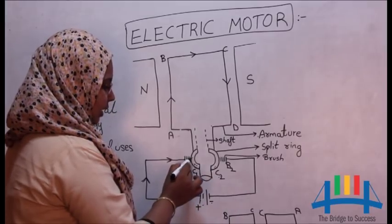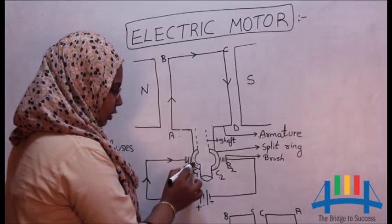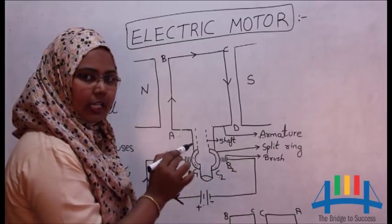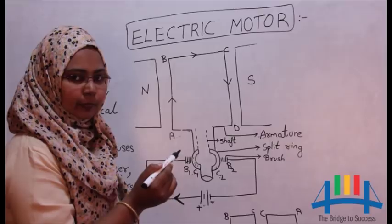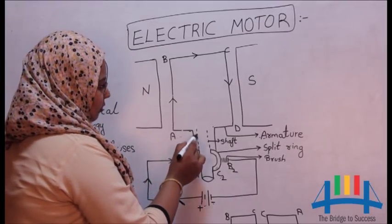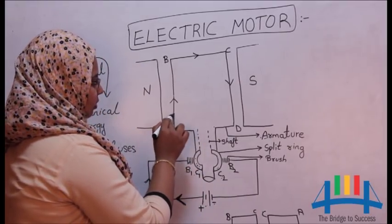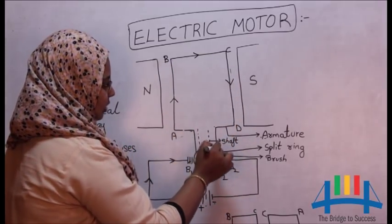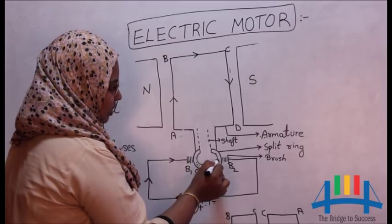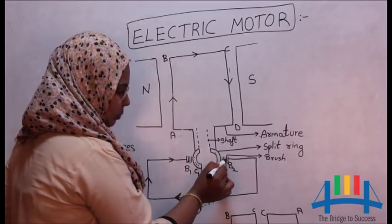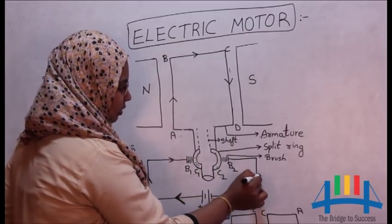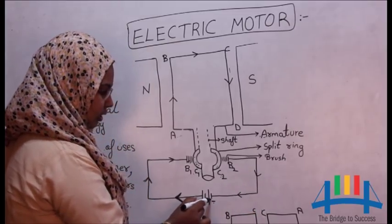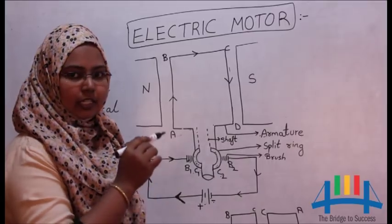From brush B1, the current enters the ring C1. Through this, it enters the shaft. Shaft is a rod like structure which keeps rotating. Through the shaft, it enters the armature all the way it goes like this and then enters the ring C2. From C2, it enters B2. Then from here, the current enters into the negative terminal. So in this way, the circuit is complete.